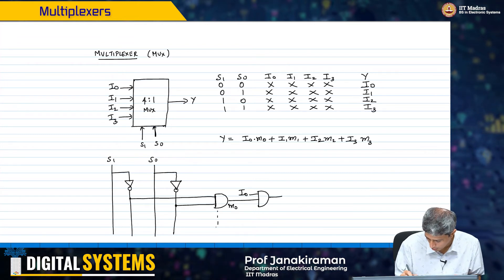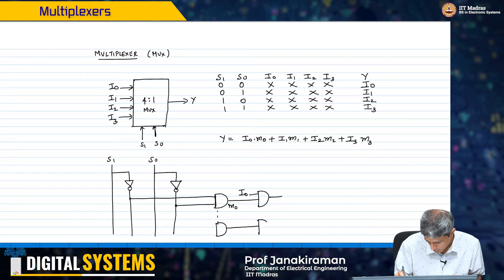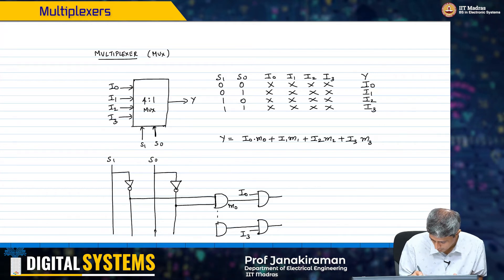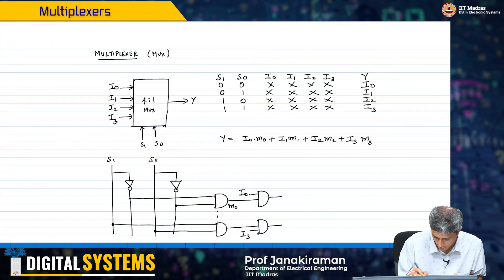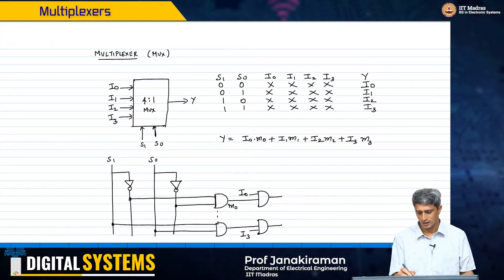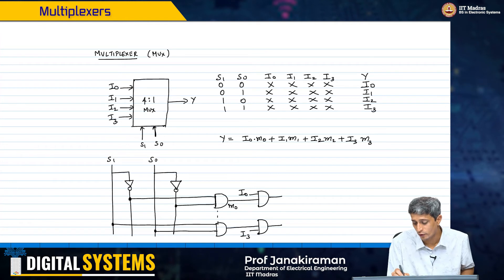This is going to give me M0 output I3. I will just take this output and this output and I will get the 4 minterms that I wanted for this expression.